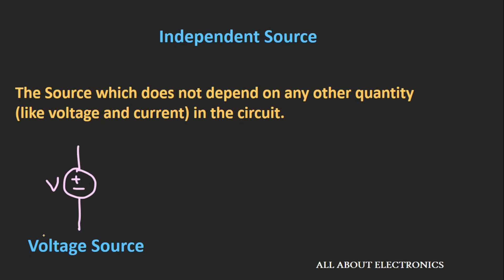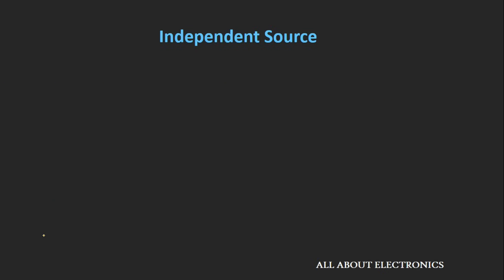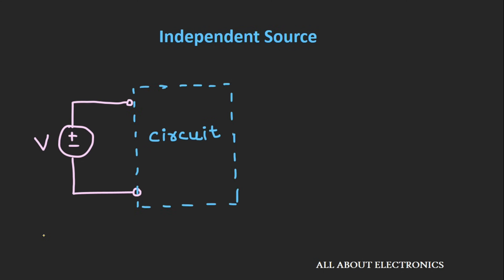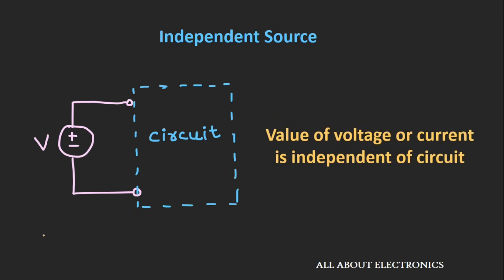The independent voltage source can be represented by this symbol. Likewise, the independent current source can be represented by this symbol. The value of this voltage or current source does not depend on the circuit — we can say that the value is independent of the circuit.